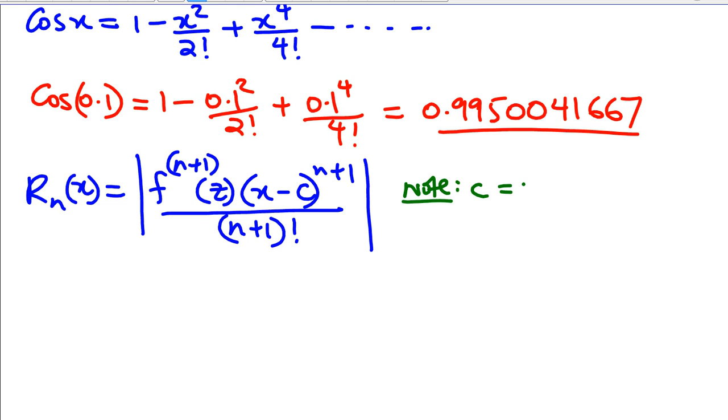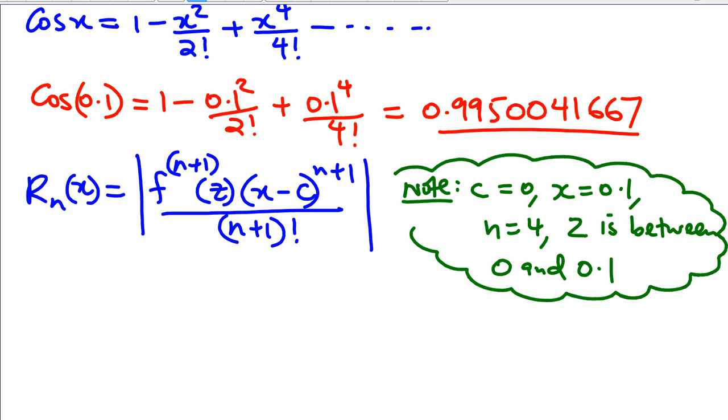Now, note that c is equal to 0. So in our case, x is equal to 0.1, what you're trying to find. n is equal to 4, the degree of the polynomial, Taylor polynomial that you're using. And so, which means z is between 0 and 0.1. So we have to choose z between 0 and 0.1.